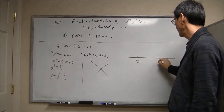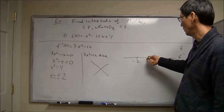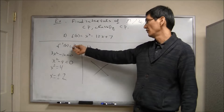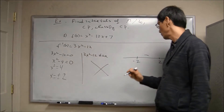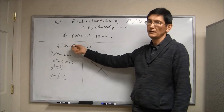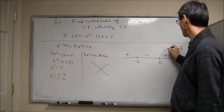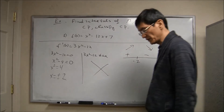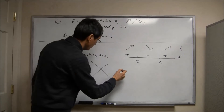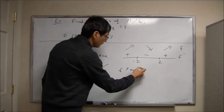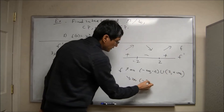So we have critical points at x equals negative 2 and x equals 2. Now we check test points: pick x equals 0 for the middle interval — we get 3(0)² minus 12 equals negative 12, so minus. Pick x equals 5: 3 times 25 minus 12 is positive. Pick x equals negative 5: 3 times 25 minus 12 is positive. So the function is increasing, decreasing, then increasing on those intervals. The function is increasing on (−∞, −2) and (2, +∞), and decreasing on (−2, 2).